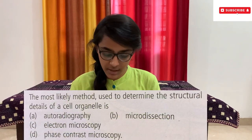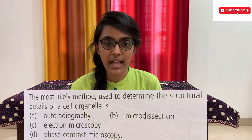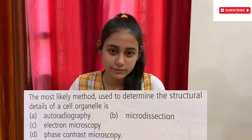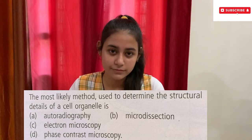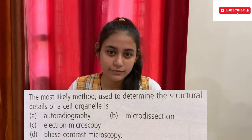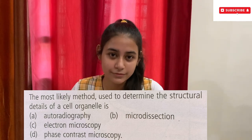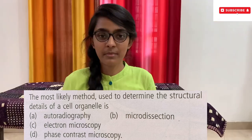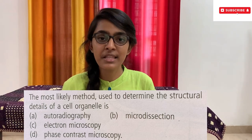The next question goes to Simran. The most likely method used to determine the structural details of a cell organelle is — options: A) Autoradiography, B) Micro dissection, C) Electron microscopy, D) Phase contrast microscopy. Option C, Electron microscopy. Are you sure? Yes. Option C, Electron microscopy, is the correct answer. Give her a huge round of applause!